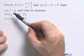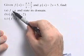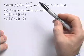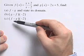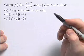For these two functions, part (a), we want to find the composition f of g and state its domain. In part (b), we want to find g of f of negative 2, and in part (c), f of g of negative 2.